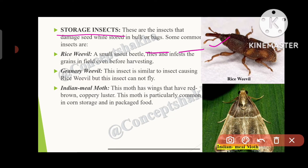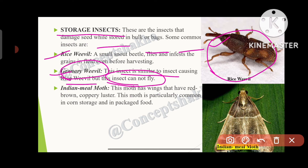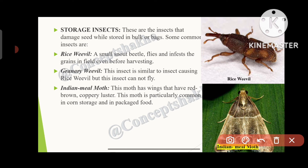Storage insects damage seeds while stored in bulk or bags in warehouses. Common examples include the rice weevil — a small snout beetle that can fly and infest grains even before harvesting — and the granary weevil, which is similar but cannot fly. The Indian meal moth has wings with a red-brown coppery luster and is particularly common in corn storage and packaged food.